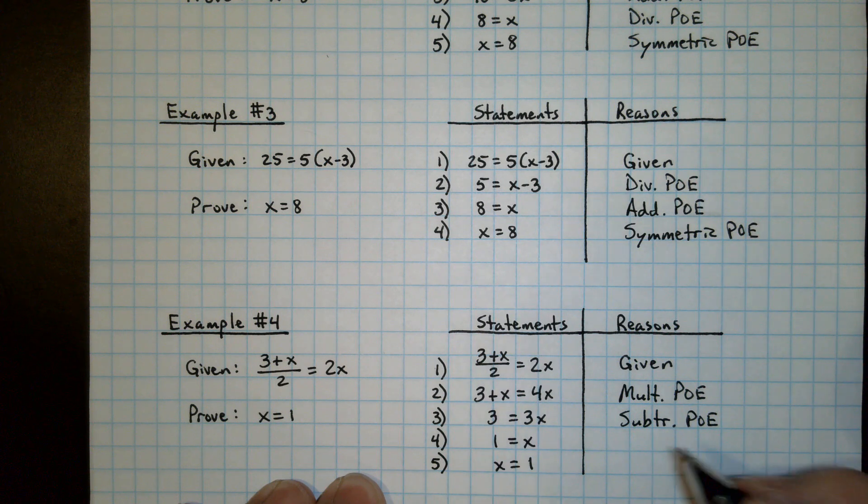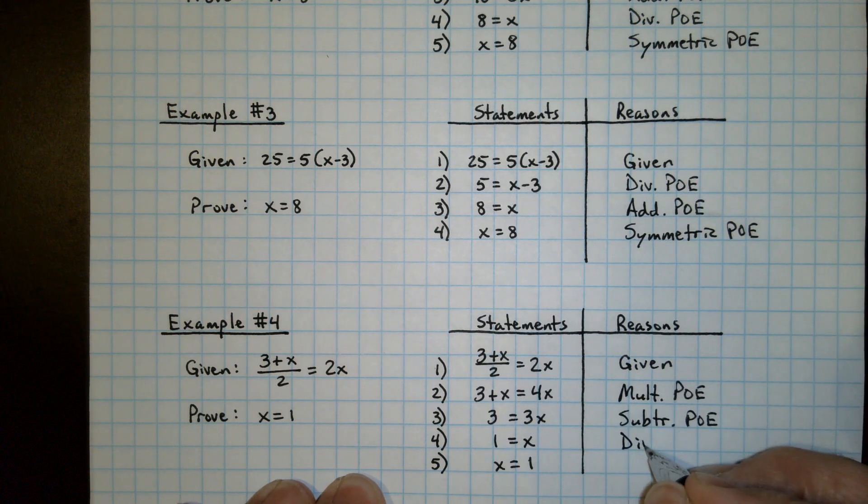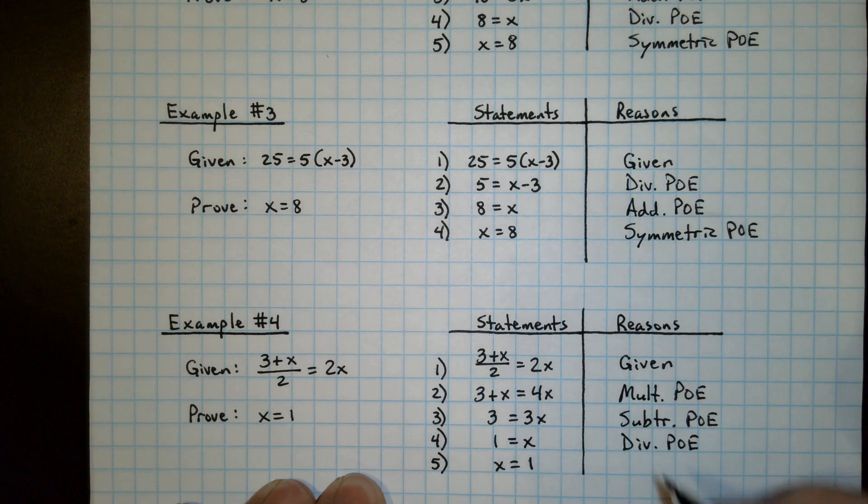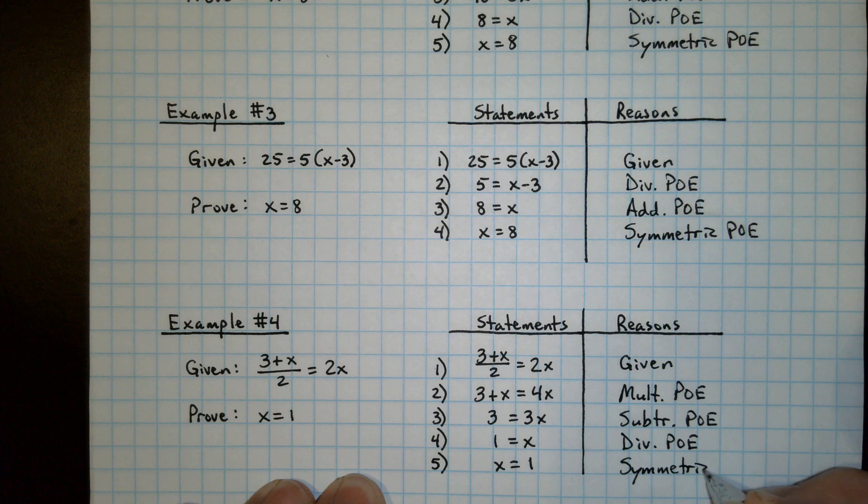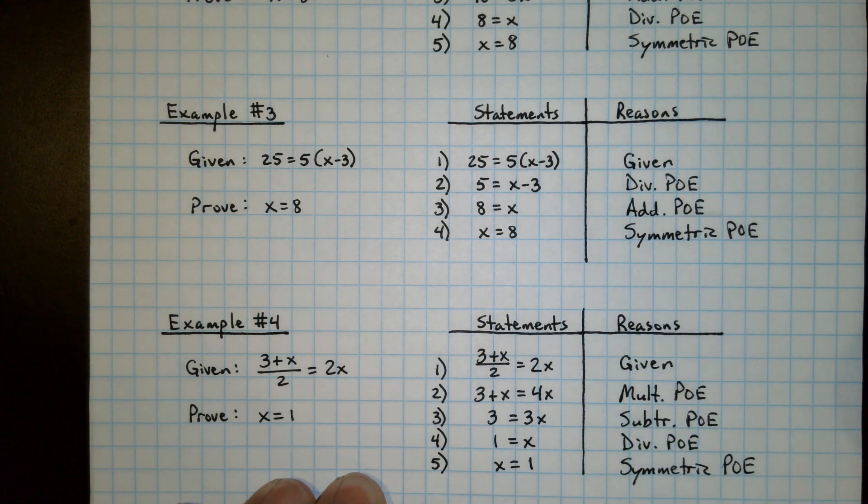Then we divide by 3. The division property of equality. And then we're swapping the two sides again. So the symmetric property of equality.